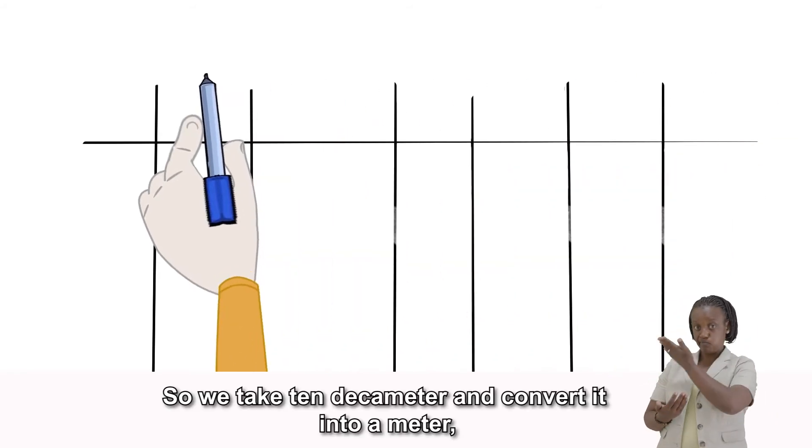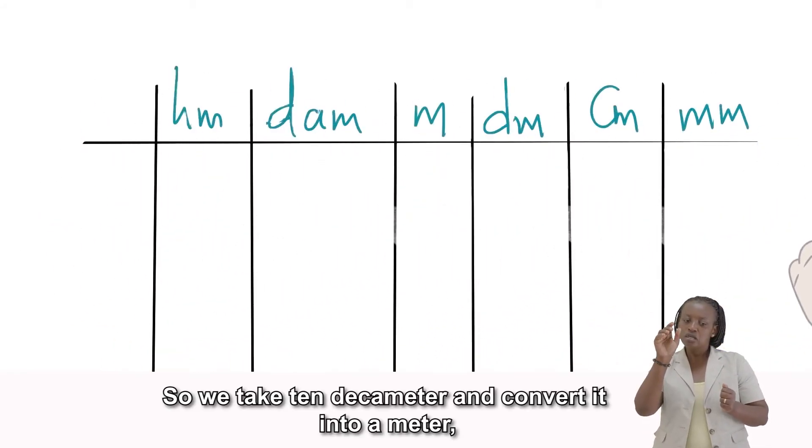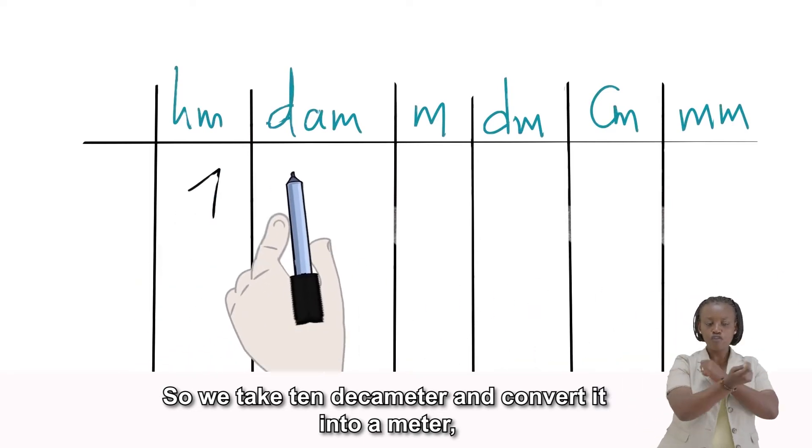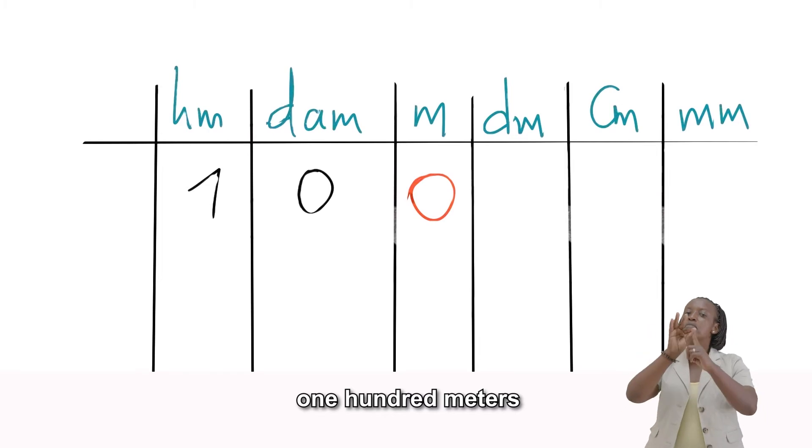So, we take 10 decameters and convert it into meters. That gives us 100 meters. Fantastic!